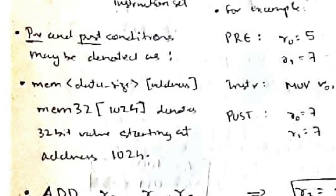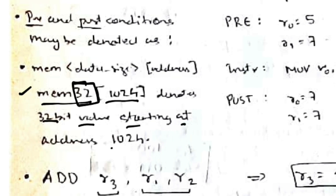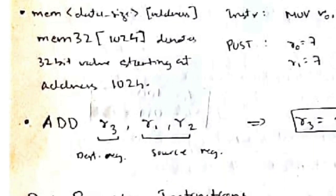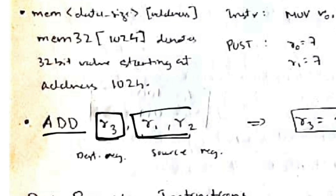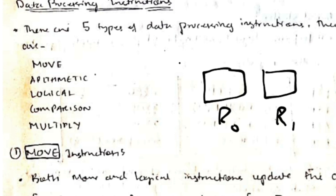When denoting a memory location, we use the address along with the data size — for example, a 32-bit value starting at address 1024. The instruction format shows the operation, the destination register, and the source registers. For instance, ADD r3, r1, r2 means r3 = r1 + r2: r1 is added to r2 and the result is stored in the destination register.